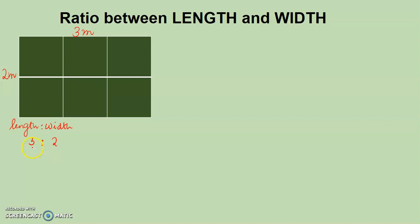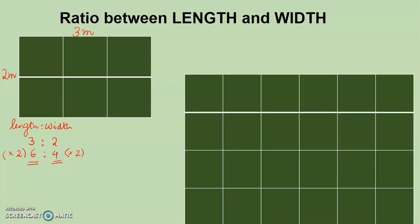The ratio is three to two. Now if we want to make a bigger flag, for example, we multiply this ratio by two. So we get three times two is six, whereas two times two is four. It means that if we take the length as six meters, we must take the width as four meters.